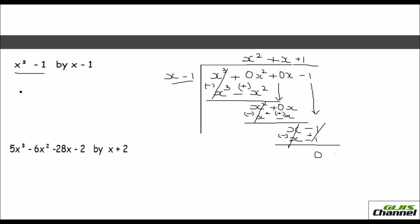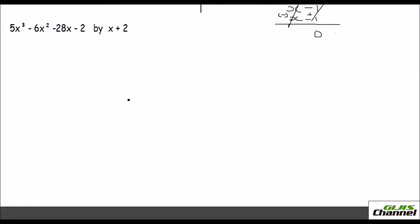So your final answer when you divide is x squared plus x plus 1. That's all — there is no remainder here. Now let's do another problem.